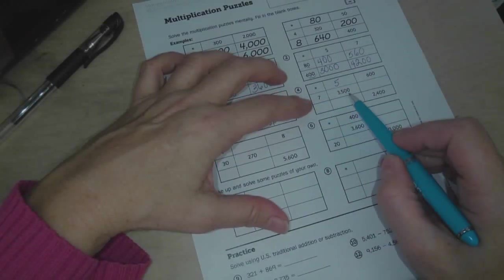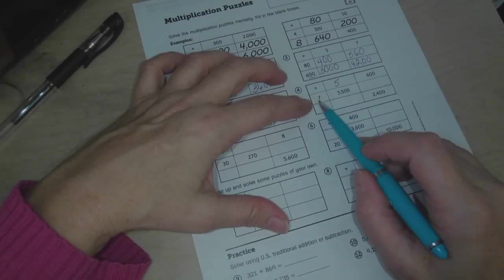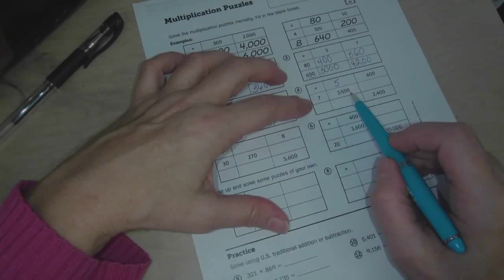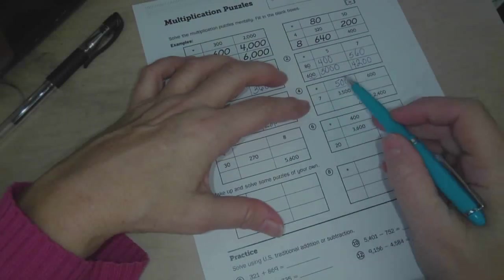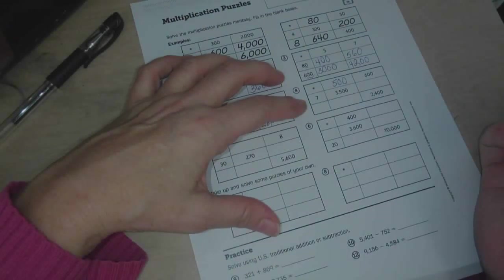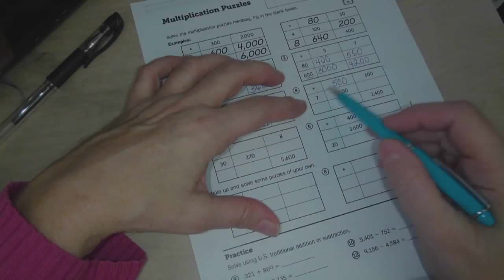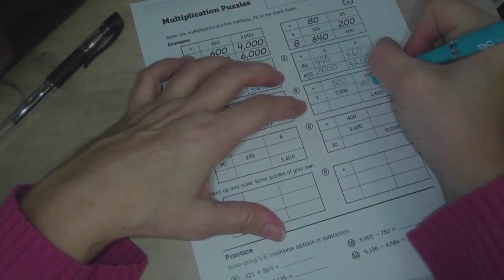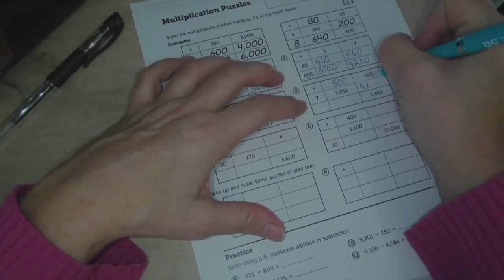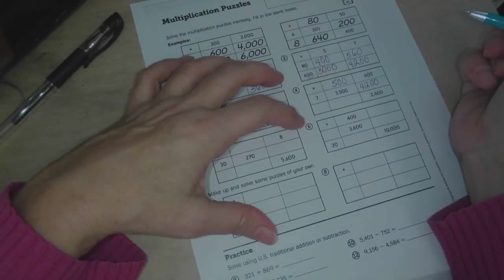Now there's two zeros here, and there aren't any zeros here. So that means we have to put those two zeros up here. So that's got to be 500. 7 times 500 equals 3,500. 7 times 600. 7 times 6 is 42, and then there's two zeros. So that's 4,200.